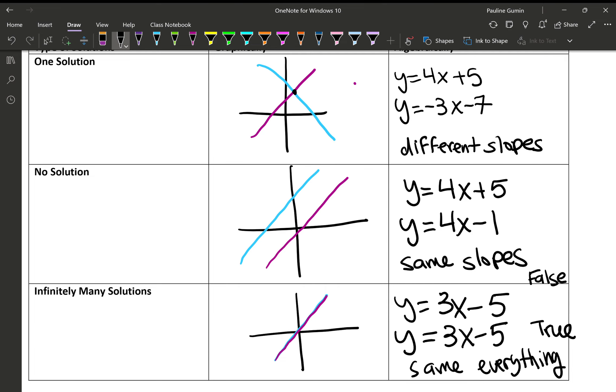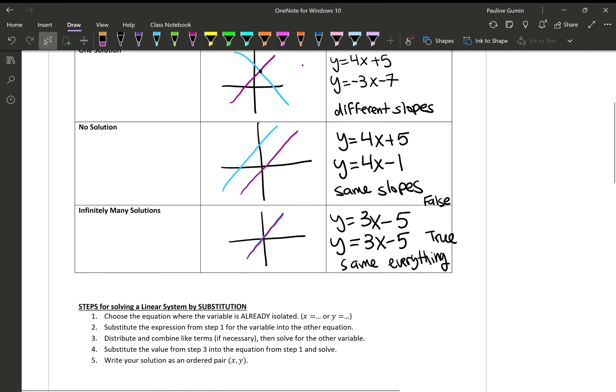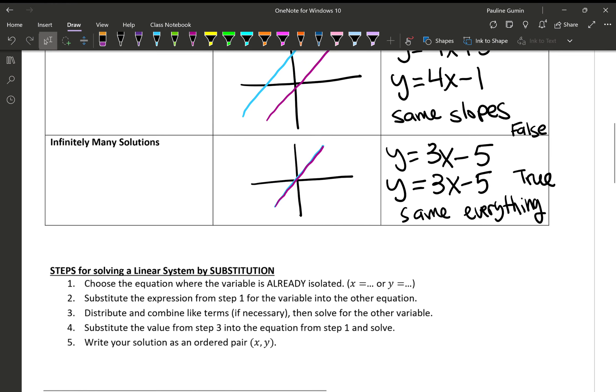Let's explore that by doing our first method called substitution. Here, I have some steps in order to help us in case you need something to look along while solving. This is how we'll do it. First, we'll choose an equation where a variable is already isolated like an x equals or a y equals. The second step is to substitute the equation from step one into the other equation. We'll distribute, we'll combine like terms and solve for whatever variable. And then we'll substitute it back in. Let's check it out.